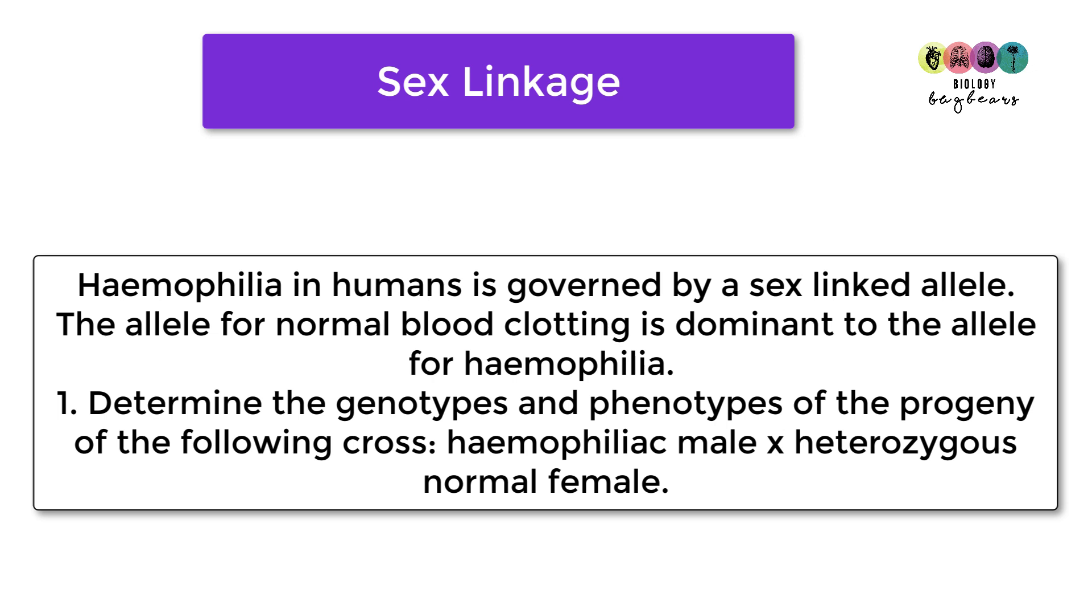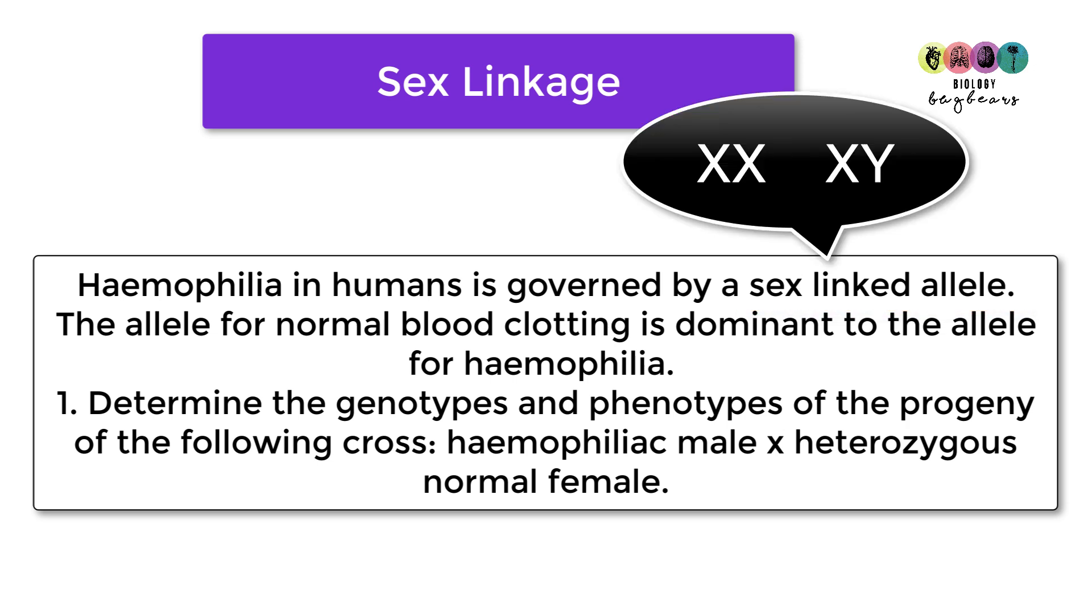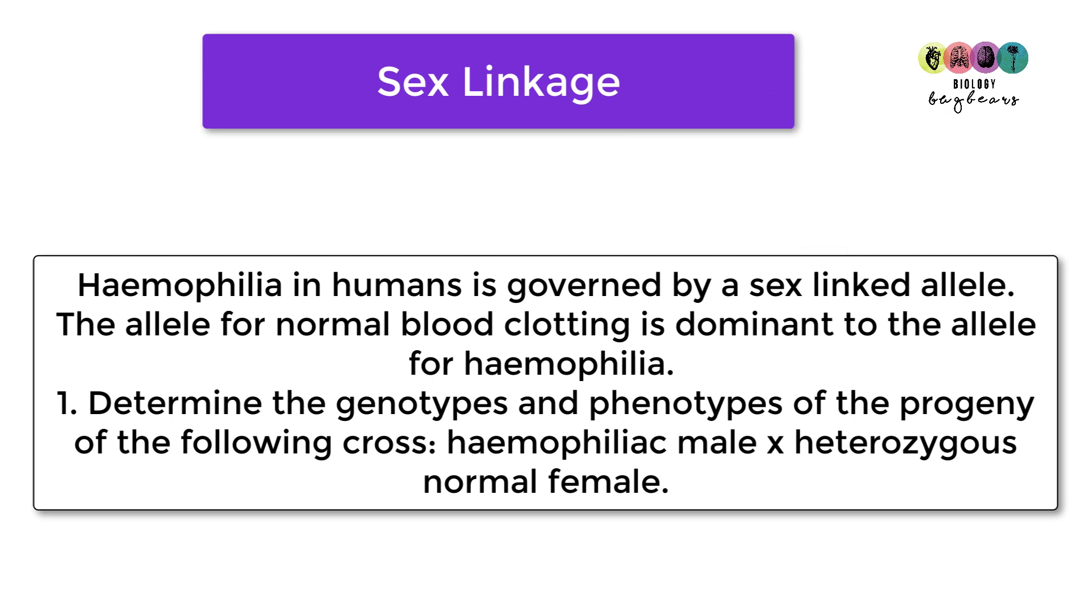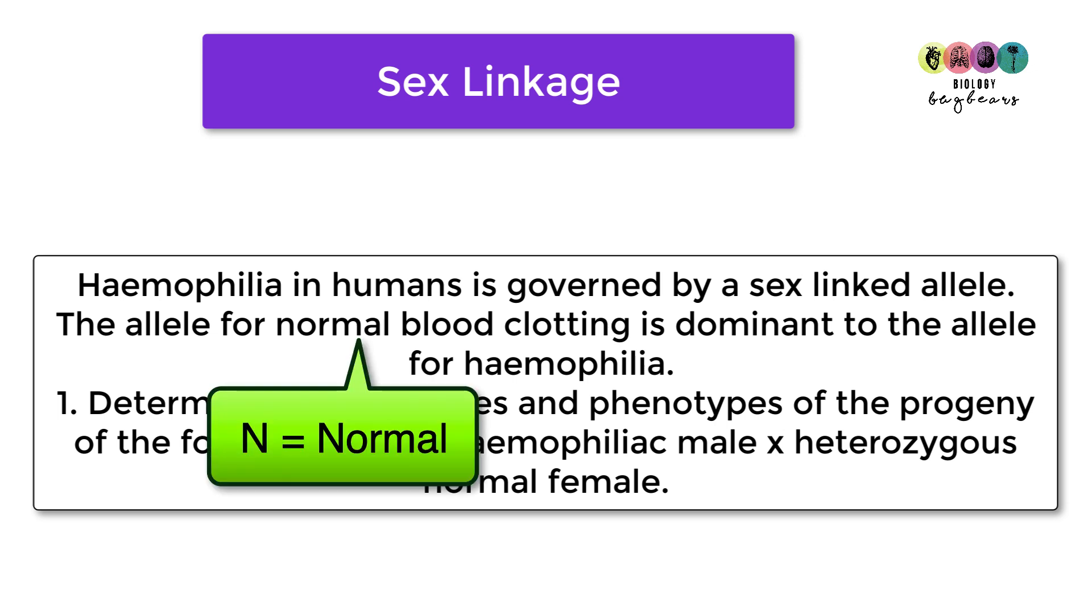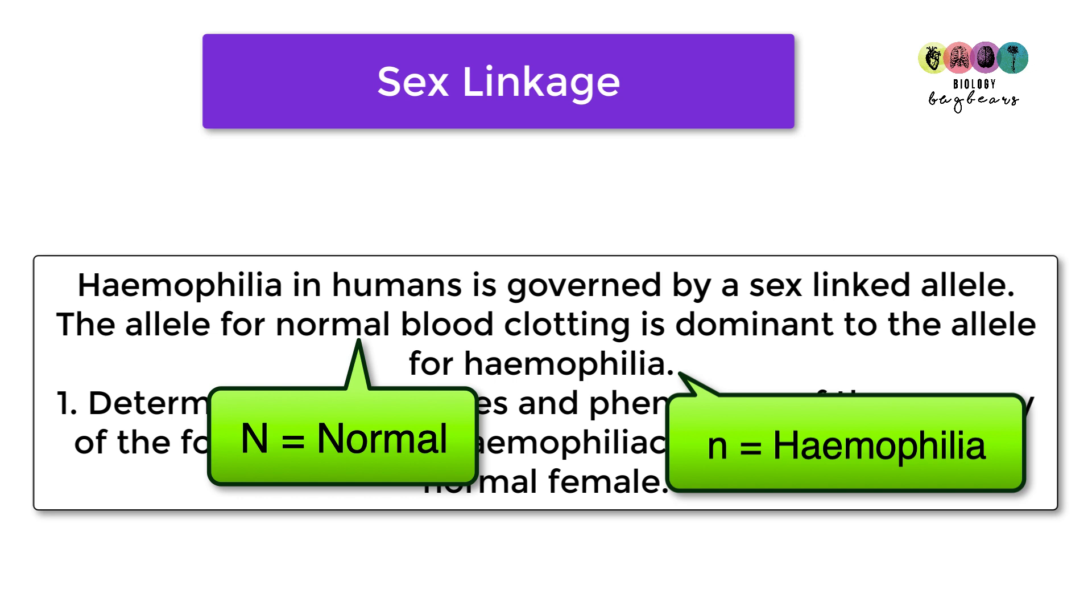So this is an example of a previous question. So let's see if we could do it. So hemophilia in humans is governed by a sex-linked allele. So as soon as you see sex-linked allele, you know you're going to have to write XX for a female and XY for a male. So that's the first thing. The allele for normal blood clotting is dominant to the allele for hemophilia. So we're going to use the dominant letter, so we're going to use a big N for normal and a little n for hemophilia. So that's our allele sorted.